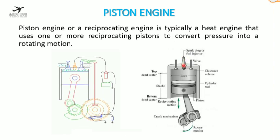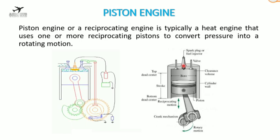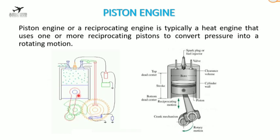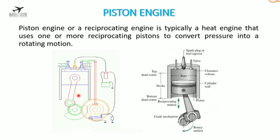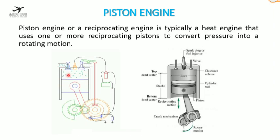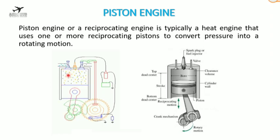This is a spark plug — in the case of a petrol engine we have a spark plug, and for a diesel engine we have a fuel injector. The piston engine has four strokes and works on the Otto cycle. The first stroke is the inlet stroke, where air enters through the inlet valve and the piston moves down.